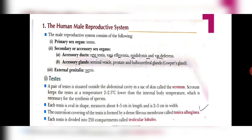The accessory ducts are rete testis, vasa efferentia, epididymis and vas deferens. Accessory glands are seminal vesicles, prostate gland and bulbourethral gland, also known as the Cowper's gland. The external genitalia in the case of the human male reproductive system is the penis.